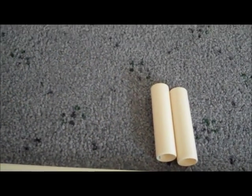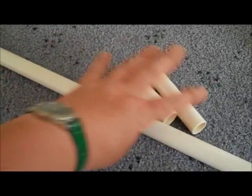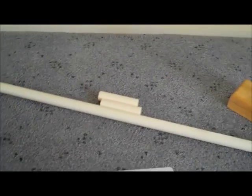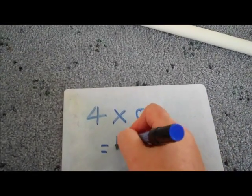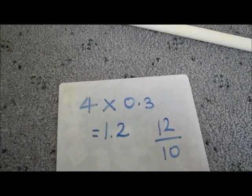So that leaves me with one point two. So four times zero point three is one point two. And that is actually twelve tenths.